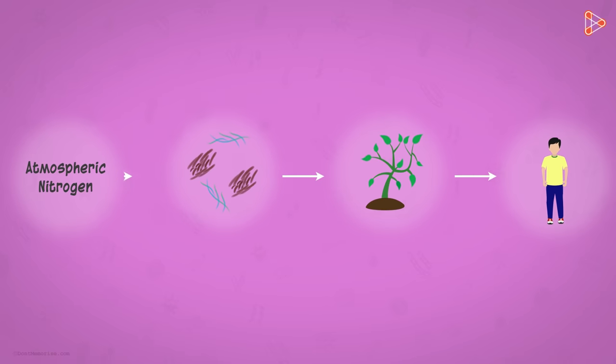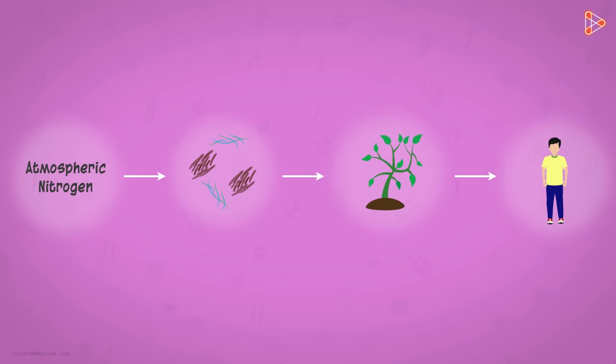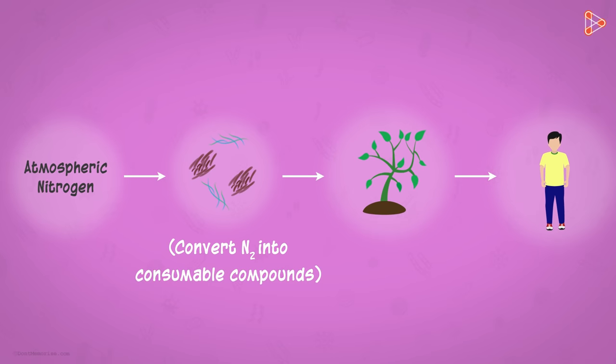But even plants can't take it directly from the atmosphere. This is where the nitrogen fixing organisms come into the picture. They convert the atmospheric nitrogen into consumable compounds for the plants. And then animals consume the plants to get this nitrogen.